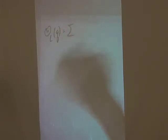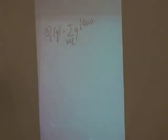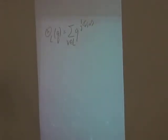Now, this generating function has a remarkable property: it satisfies a functional equation. Here it is on my third page. Remember θ_L(q) is the sum over lattice vectors of q^(½‖v‖²). Remarkably enough, the theta function can be thought of as a sum over a lattice of some rapidly decaying function, and we can apply Poisson summation to that.